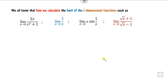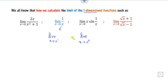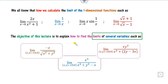As we all know how to compute the limits of one-dimensional functions. We take the limit from 0 minus and compute the limit as 0 plus, then check whether they are equal or not. If they are equal, we say the limit exists; otherwise, it does not. The question arises: how do you find the limits of more than one variable, like when there are two variables x and y?